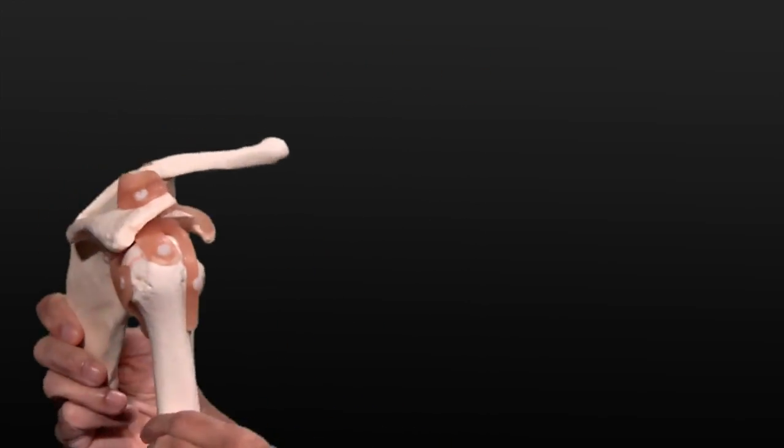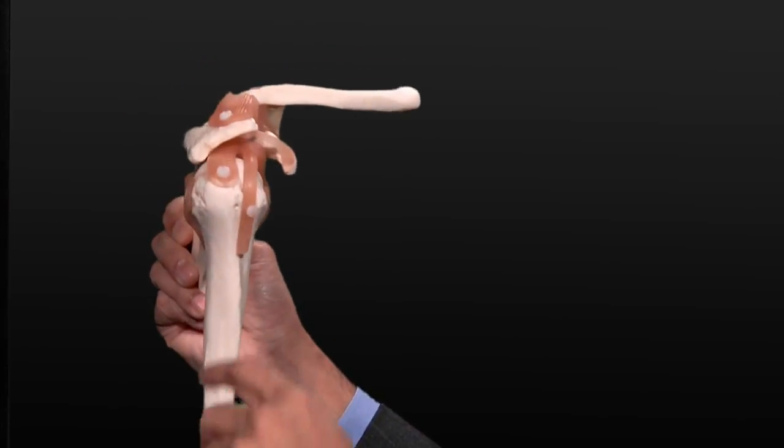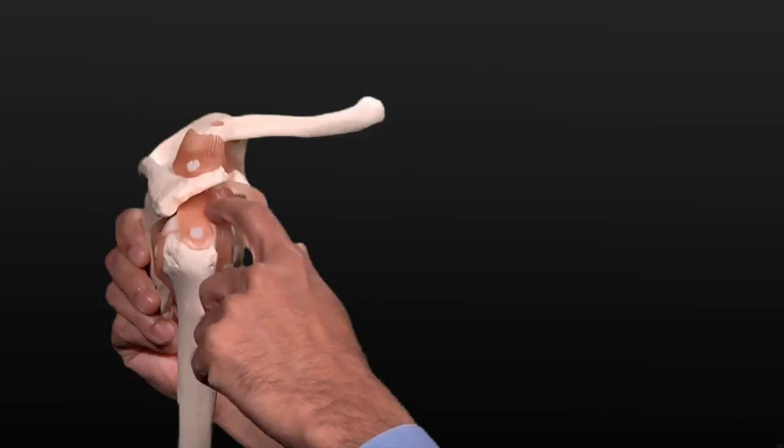If you look at the rotator cuff, it actually lives in somewhat of an inhospitable environment, meaning that there's bone above and there's bone below.